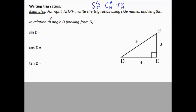Let's see what the directions say. For right triangle DEF, write the trig ratios using side names and lengths. In relation to angle D, looking from D. So first of all, if we're looking from angle D, we want to label the sides that are opposite, adjacent, and hypotenuse.